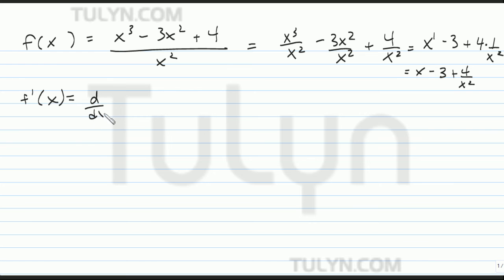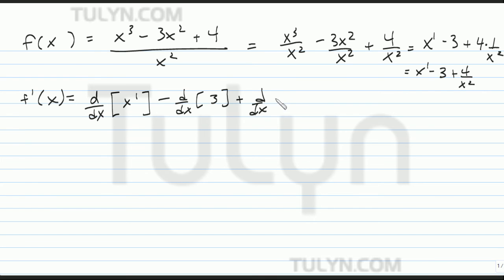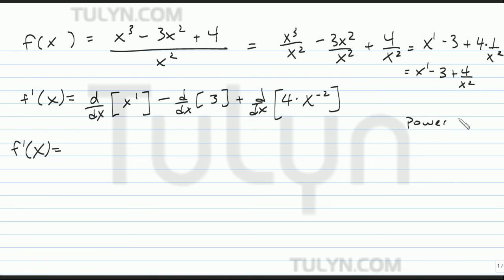So if you find the derivative with respect to x, it's going to be the derivative of x to the first power, minus the derivative of 3, plus the derivative of 4 times x to the negative second power. Find the derivative using the power rule. The power rule says the derivative of x to the n power is n times x to the n minus 1.